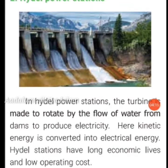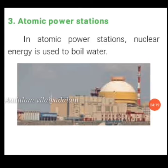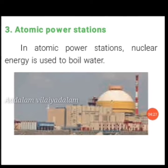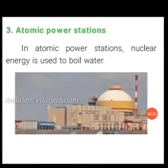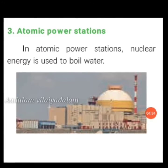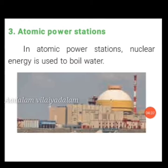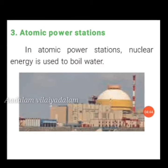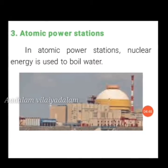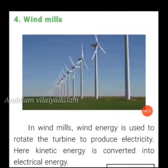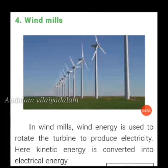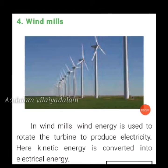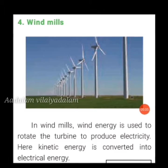In an atomic power station, nuclear energy is used to boil water and the steam produced is used to rotate a turbine, generating electricity. Atomic power stations are also called nuclear power stations, where nuclear energy is converted into electrical energy. In windmills, wind energy is used to rotate a turbine to produce electricity — here also, kinetic energy is converted into electrical energy.